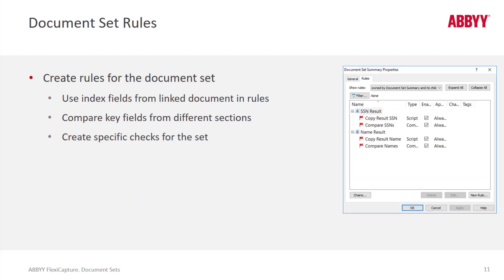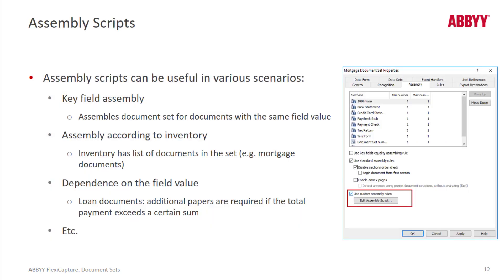It's critically important that we can now use out-of-the-box rules to compare data from not one document, but from differing documents in your document set, which will really speed up cross validations. To do that, you need to make the fields you want to use in these rules index fields. With assembly scripts, we can do things like key field assembly — assembling document sets for documents with the same field value, assembly according to inventory, or assembly dependent on a certain field value. For instance, with loan documents, if additional documents are needed when a total payment exceeds a certain sum, you can handle that with an assembly script.